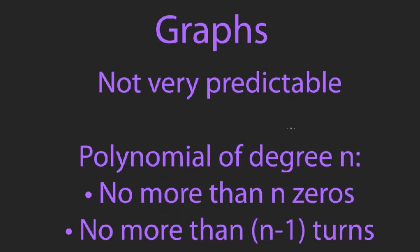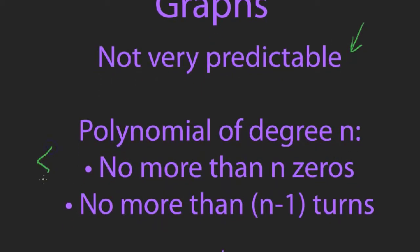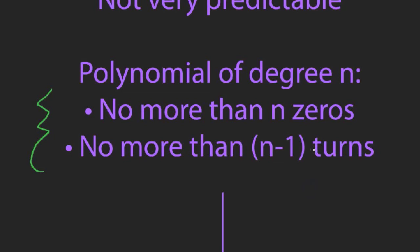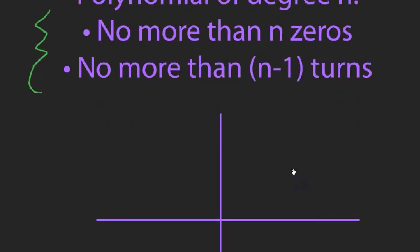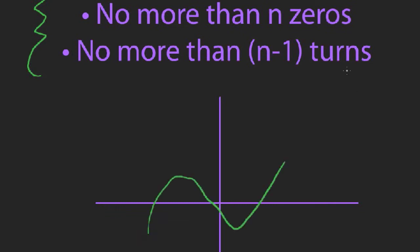The graphs of polynomials are not very predictable — two polynomials can have very similar-looking graphs but very different formulas, or vice versa. At minimum: a polynomial of degree n will have no more than n zeros, meaning it won't cross the x-axis more than n times, and no more than n minus 1 turns. Here's a degree 3 polynomial — it has two turns and three zeros, consistent with those rules.